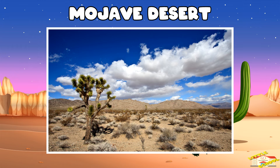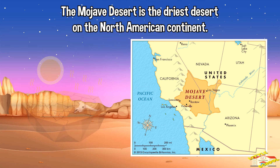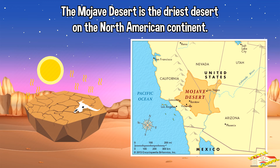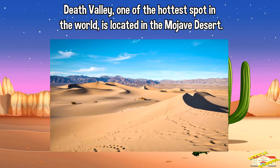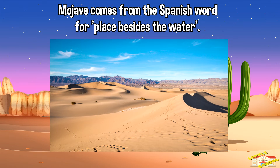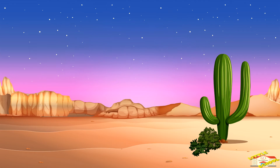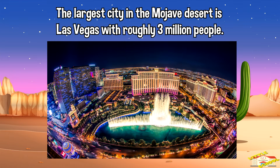The Mojave Desert is the driest desert on the North American continent. Death Valley, one of the hottest spots in the world, is located in the Mojave Desert. Mojave comes from the Spanish word for 'place beside the water.' The largest city in the Mojave Desert is Las Vegas, with roughly 3 million people.